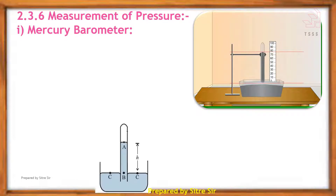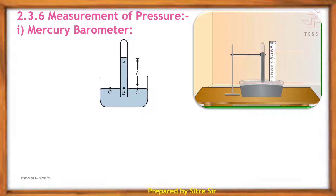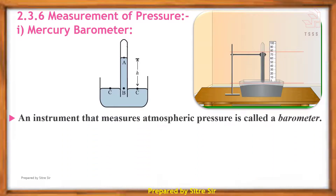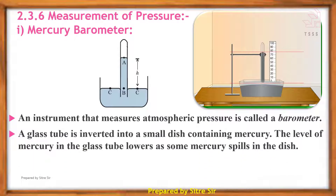Now consider this diagram. An instrument that measures atmospheric pressure is called a barometer. A glass tube is inverted into a small dish containing mercury. The level of mercury in the glass tube lowers as some mercury spills into the dish.